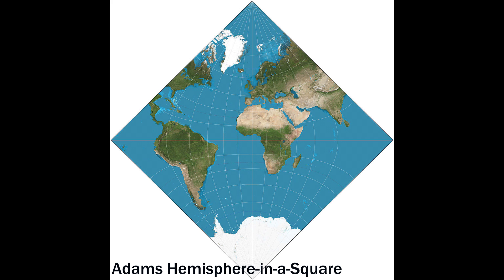Here's another one that conforms to shape — it's called the Adams Hemisphere in a Square projection. It's a hemisphere in a square. This is an example of a projection that doesn't really have any practical uses, but looks kind of cool. Much like a Mercator, the areas in the polar regions are distorted and look much larger.